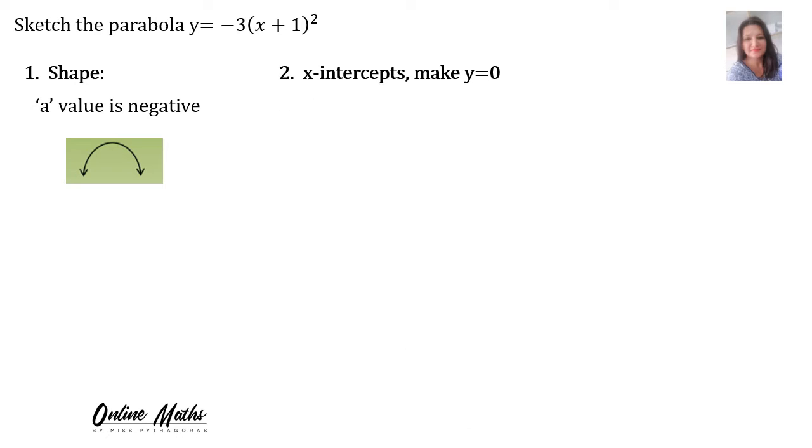Step 2, x-intercepts, make y equal to 0. When we make y equal to 0, then we end with 0 equals. Now what happened here was I divided by negative 3. So 0 divided by negative 3 is 0 and then the negative 3 is gone on the other side.